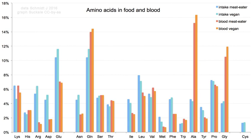Amino acids are organic compounds containing amine and carboxyl functional groups, along with a side chain specific to each amino acid. The key elements of an amino acid are carbon, hydrogen, oxygen, and nitrogen, although other elements are found in the side chains of certain amino acids.